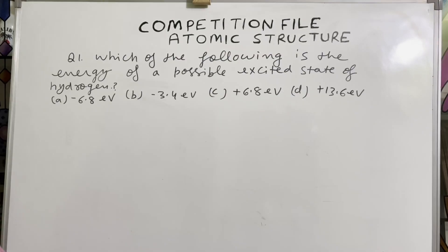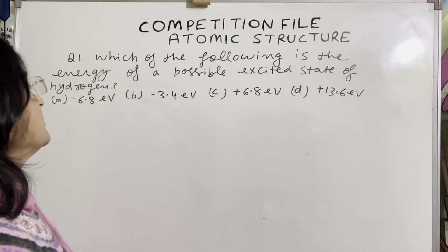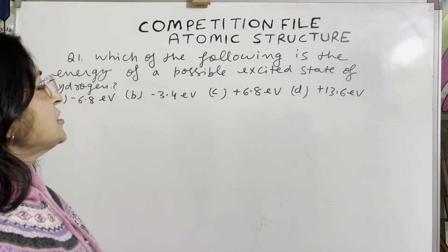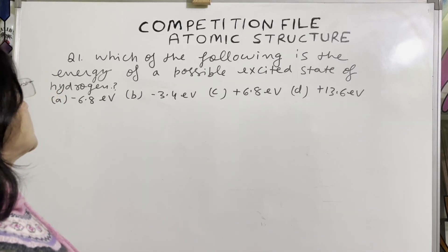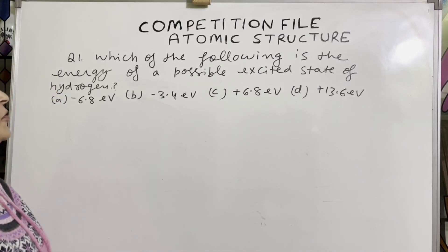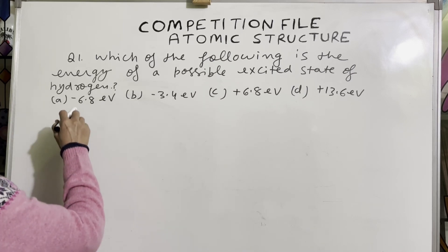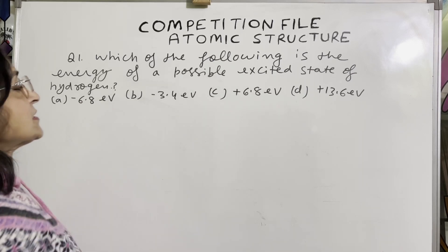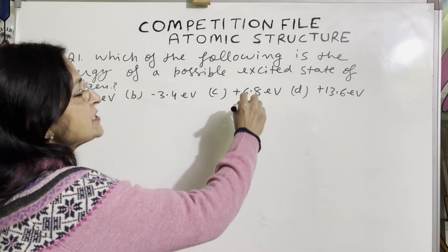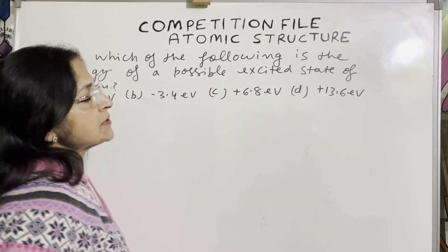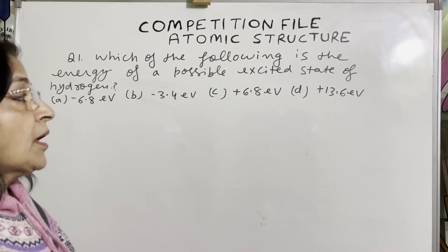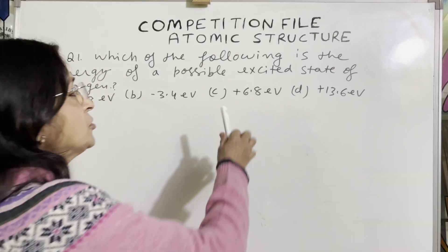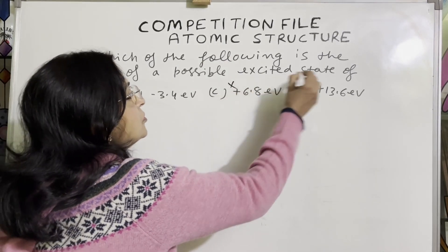Question number one: Which of the following is the energy of a possible excited state of hydrogen? Four choices are given: minus 6.8 eV, minus 3.4 eV, plus 6.8 eV, and plus 13.6 eV. Since energy of the electron is always negative, we can cancel options C and D.